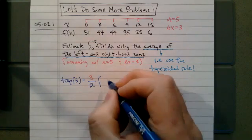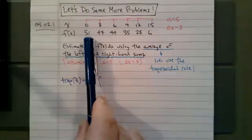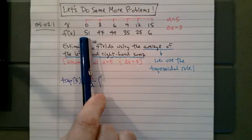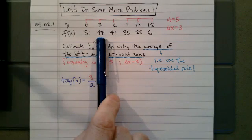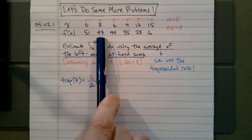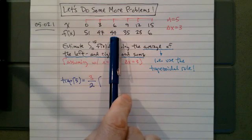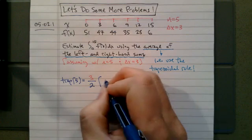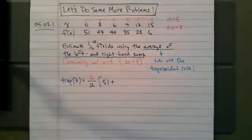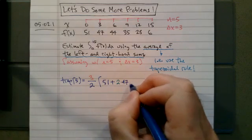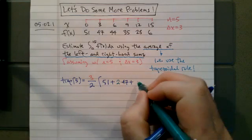And then we're going to start off with the 51 is the only thing, is only the left of this first box and 47 is the right of this first rectangle. But 47 is also the left of the second rectangle. So we're going to have two 47s in our sum that we're going to go on to divide by 2. So we're going to have a 51, plus two copies of 47, plus two copies of 44,